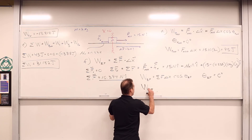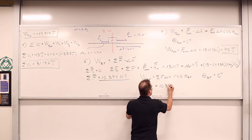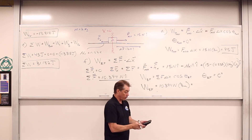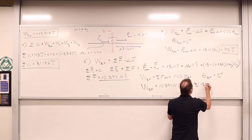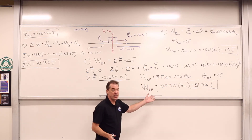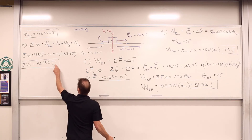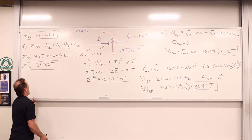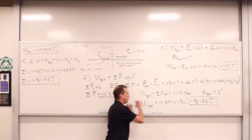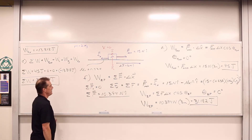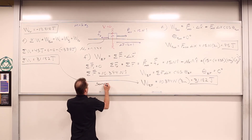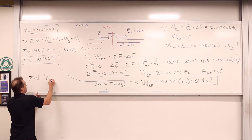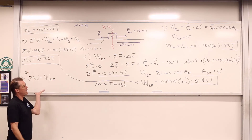The work done by the net force equals 10.394 newtons times 3 meters, which is 31.182 joules. Does that number look familiar? Of course — it's the same as the net work done. The work done by the net force is equivalent to the net work done, because we're either adding up the individual works or adding up all the forces first — both give the same result. The net work done equals the work done by the net force.